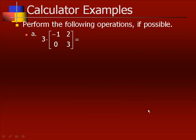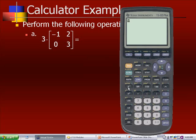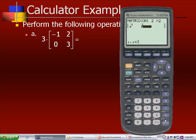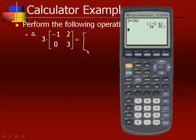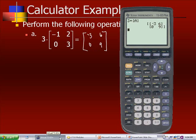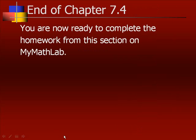For the first problem we did not do on the calculator, let's do that now: 3 times the matrix with entries negative 1, 2, 0, and 3. Go to second matrix, slide over to edit, and make this a 2 by 2 matrix with entries negative 1, 2, 0, and 3. Second quit. Then enter 3 times second matrix, option A, which gives us negative 3, 6, 0, and 9 — exactly what we got using the pencil and paper method. Now you're ready to complete this section of homework on MyMathLab.